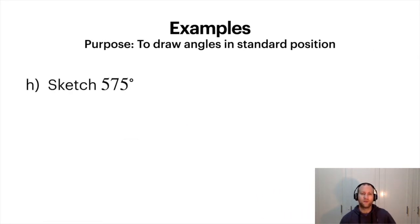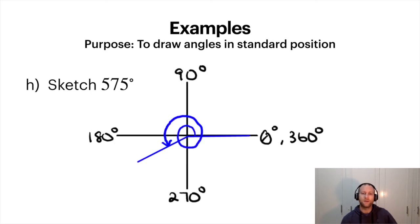Try another one. 575 degrees. So notice here in this one I've rotated a full time 360 degrees and then another little bit. Notice here I did 360 degrees and then I did 575 minus 360. So I need to go an additional 215 degrees. So you can rotate multiple times. That's totally fine. You just need to figure out how much you are going to rotate in addition to that.